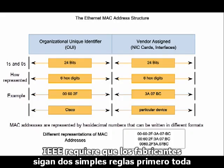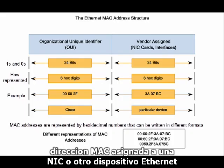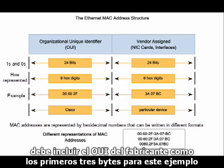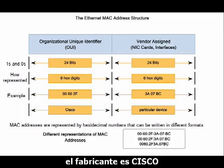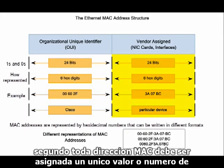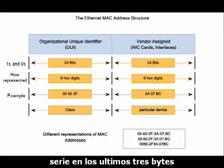IEEE requires the vendor to follow two simple rules. First, all MAC addresses assigned to the NIC or other Ethernet device must include that vendor's OUI as the first three bytes — for this example, the vendor is Cisco. Second, all MAC addresses must be assigned a unique value or serial number in the last three bytes.